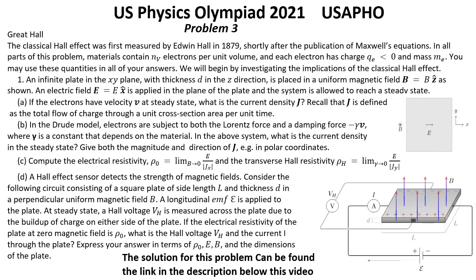The classical Hall effect was first measured by Edwin Hall in 1879, shortly after the publication of Maxwell's equations. In all parts of this problem, materials contain Nv electrons per unit volume,